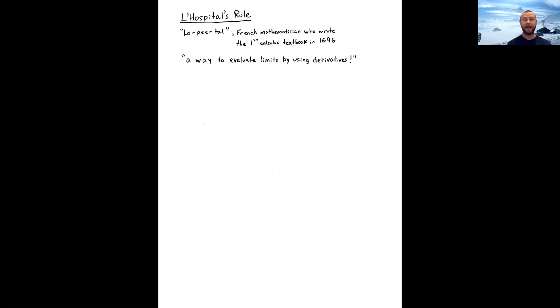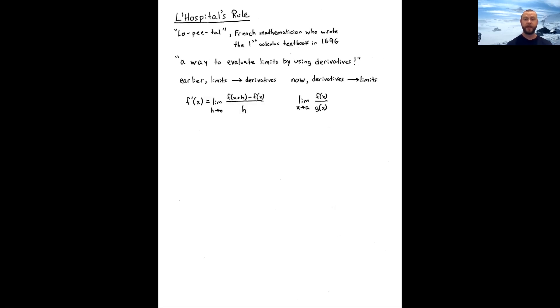L'Hôpital's Rule is a way to evaluate limits by using derivatives. This is a little circular — if you think back to the beginning of the course, we used limits to give the definition of derivatives: the limit as h approaches zero of the difference quotient, f(x+h) minus f(x), all divided by h. Now our goal is to evaluate a limit of f(x) divided by g(x).